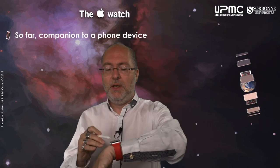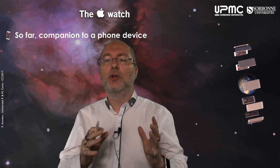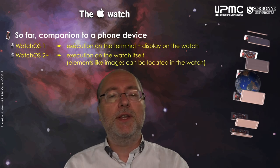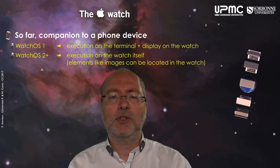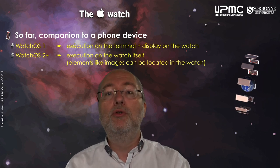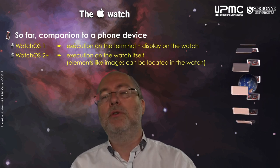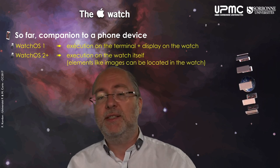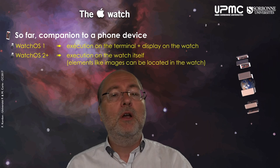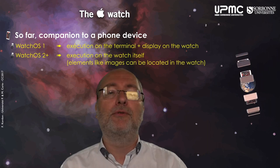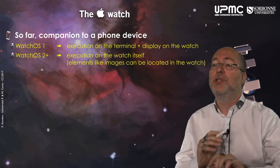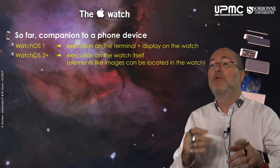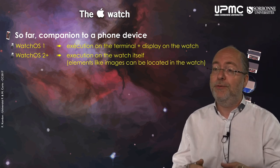What is the Apple Watch? I have one here. It's a companion to a phone device. The idea is to have some operations that you can do on your watch — you can drive applications, watch things, etc. For example, when you get an SMS and the phone is in your pocket, you can read it on the watch, or you can check the weather, and of course you have an interaction between the watch and the phone.